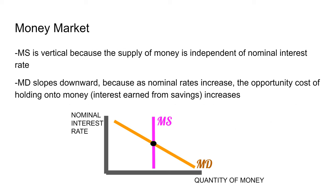Now we talk about the money market. In the money market you have a vertical money supply curve and a downward-sloping money demand. Money supply is vertical because the Fed sets the amount of money in the market — the Fed isn't influenced by nominal interest rates, so regardless of what nominal interest rates are, if the Fed sets a certain amount of money in the economy, that amount will be there.